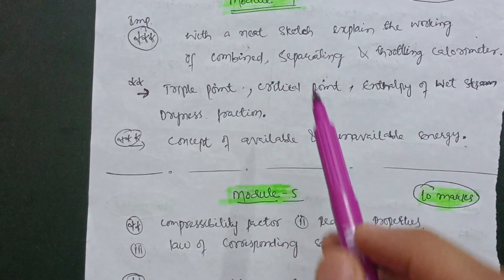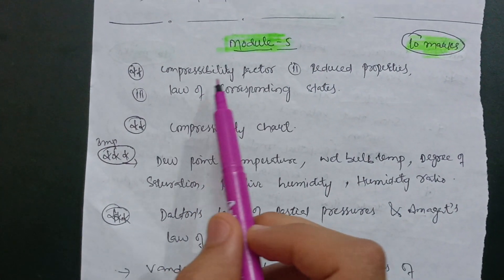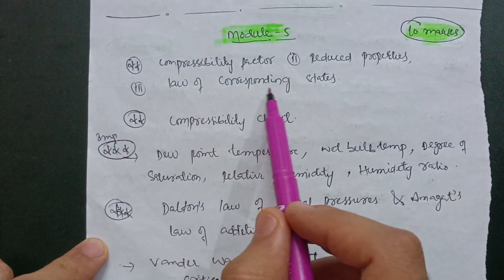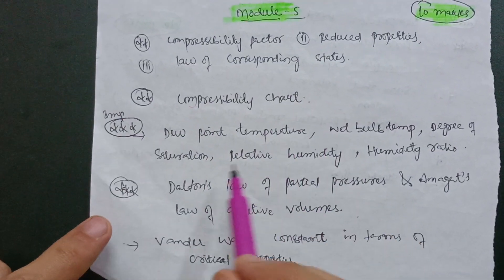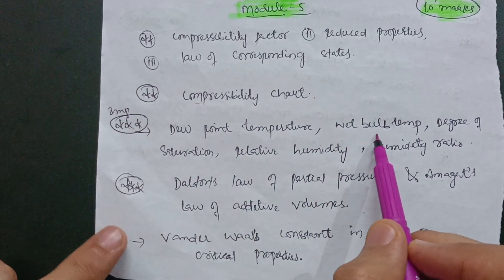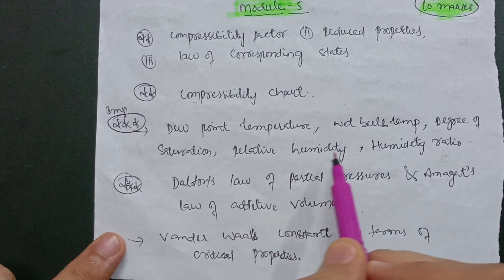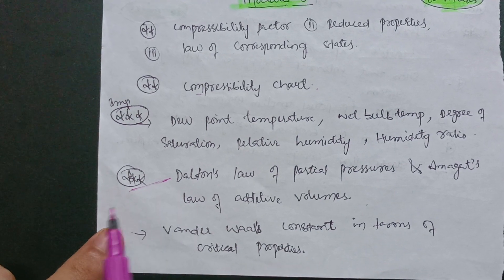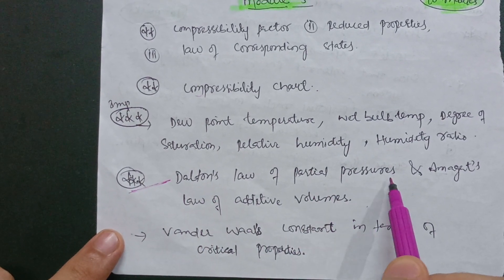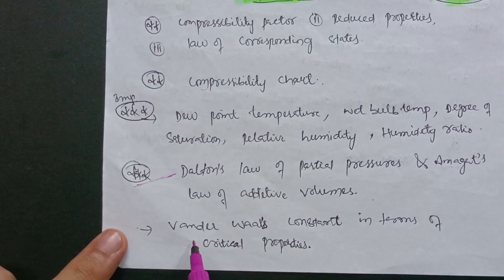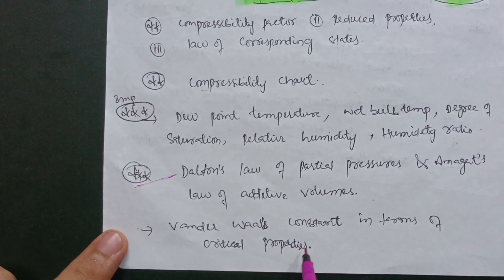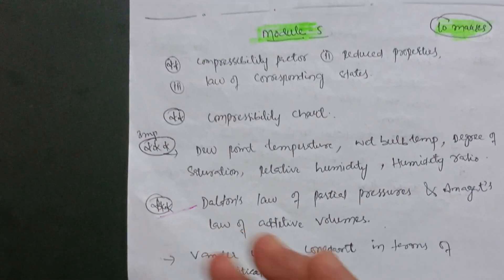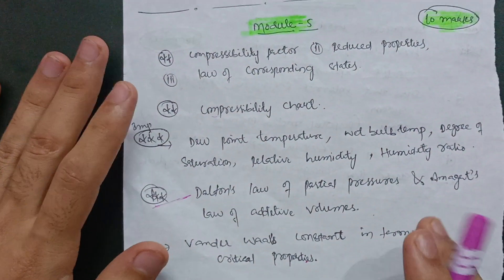In module five, cover theory concepts like compressibility factor, reduced properties, law of corresponding states, and compressibility chart. Also cover definitions like dew point temperature, wet bulb temperature, degree of saturation, relative humidity, and humidity ratio. The super important question in this module is Dalton's law of partial pressures, Amagat's law of additive volumes, and Van der Waals constant in terms of critical properties.